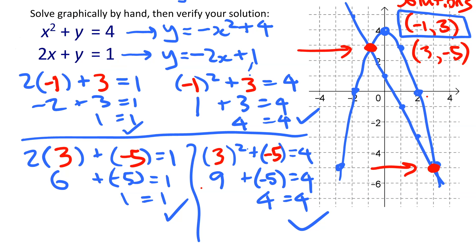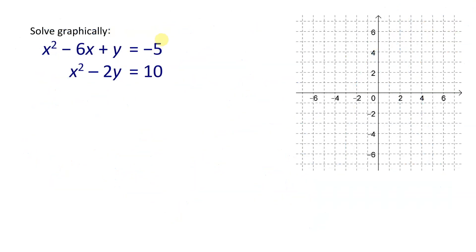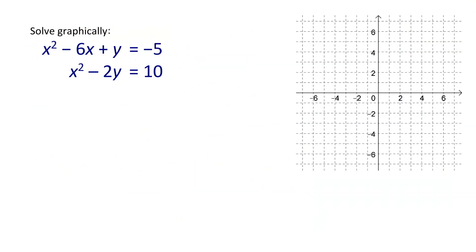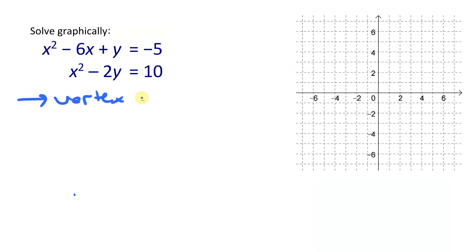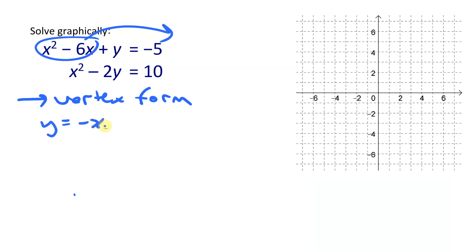Let's look at another example. This second example requires a bit more work because the equations are more complicated. For the first equation, we'll use two different methods to get the information needed to graph it. Method one is putting it into vertex form by completing the square, starting by isolating y: y = -x² + 6x - 5.